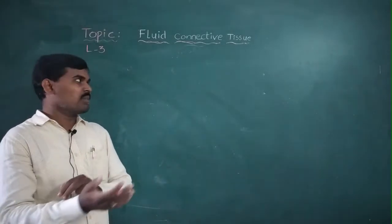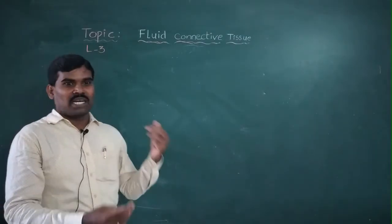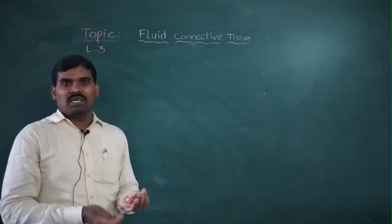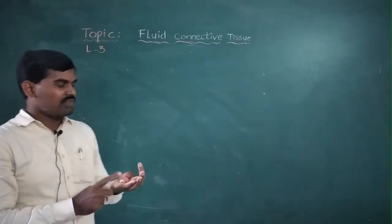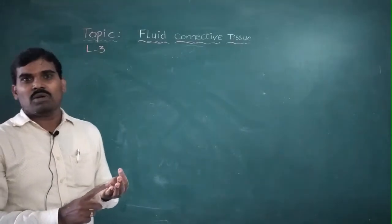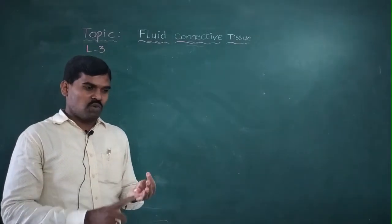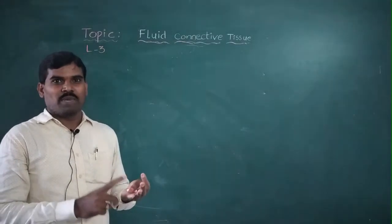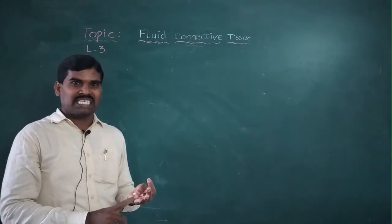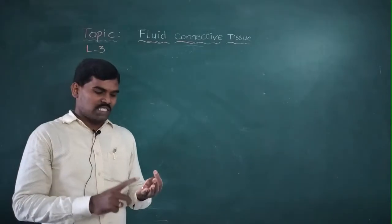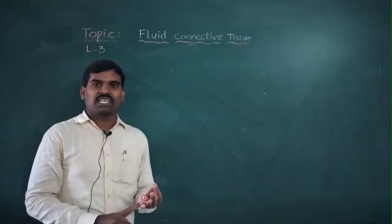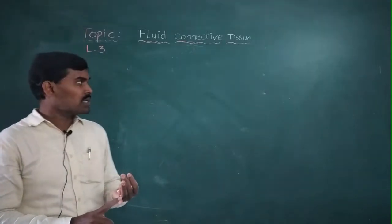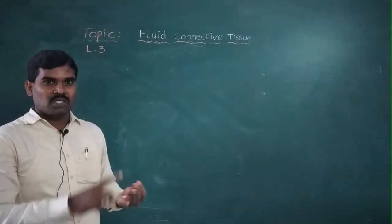The granulocytes are three types. The first one is basophils, second is acidophils, and third is neutrophils. Basophils take up basic dyes, acidophils take acidic dyes, and neutrophils take neutral dyes.